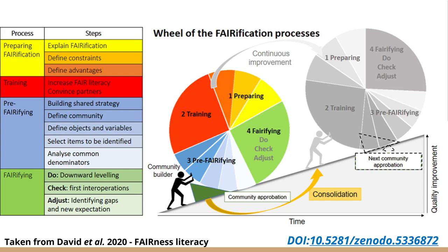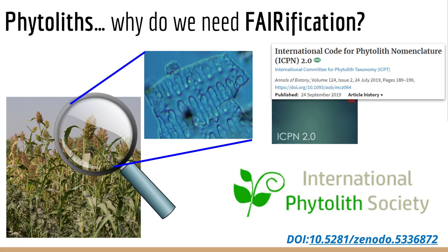This project is starting the journey towards FAIR data, and we hope that you will all come with us on this journey. This diagram is very useful for thinking about the different stages of implementing FAIR. Within our community, there have been some positive initiatives to move towards standardisation of nomenclature and data sharing. Through the International Phytolith Society, there has been the recent publication of a second version of ICPN, and also guidelines for morphometric studies that have started to move us in the right direction in terms of data management.